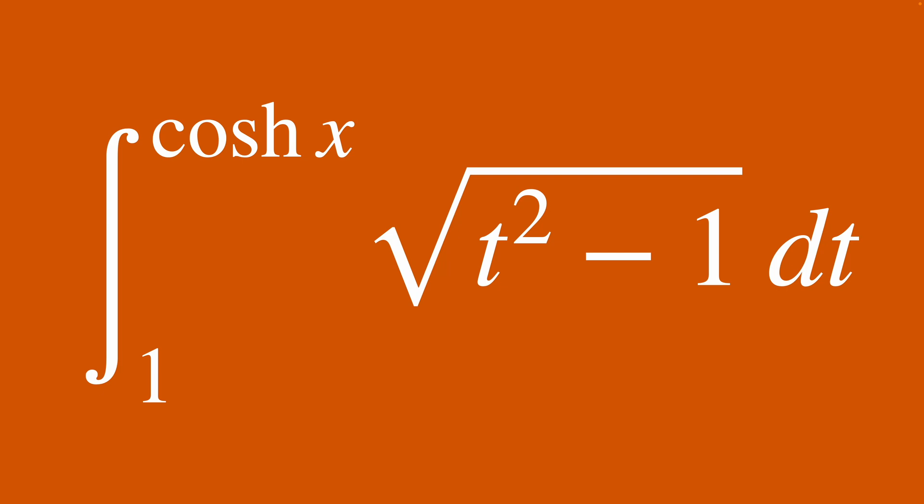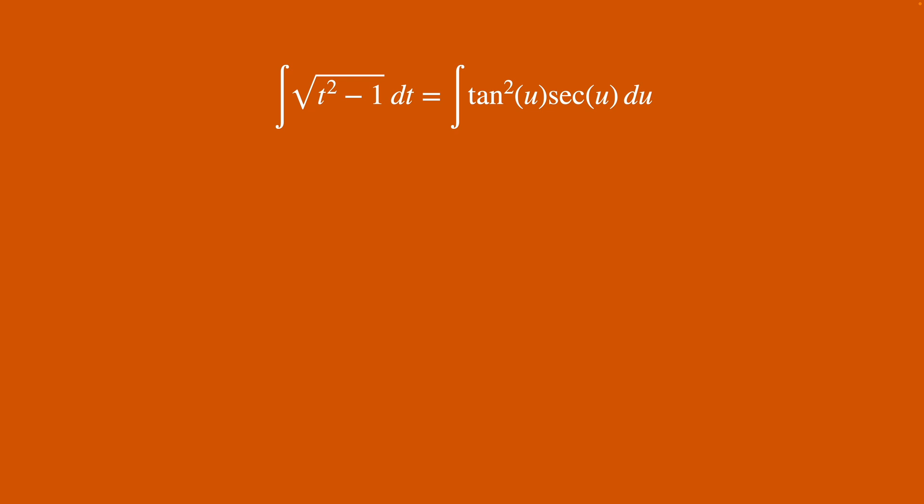We'll just solve the indefinite version first to make this cleaner. So we drop our endpoints and now a substitution with t for sec u and dt as tan u sec u du gives this guy on the right here.